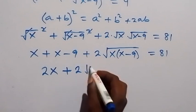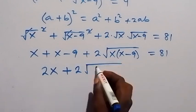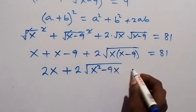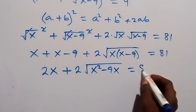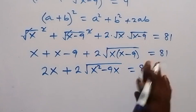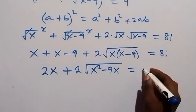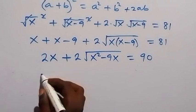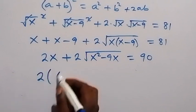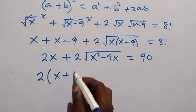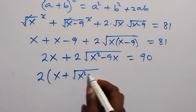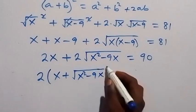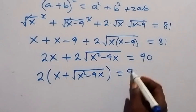So we have 2 root of x squared minus 9x. Opening the bracket gives x squared minus 9x, equals 81 plus 9, which is 90. We factor 2 out: 2 into bracket x plus root of x squared minus 9x equals 90.